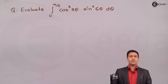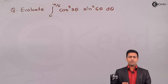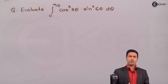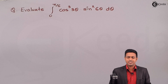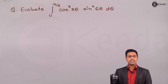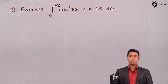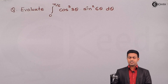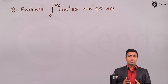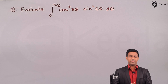Hello students, here we are going to see the concept of beta function and solve a numerical based on its definition. The problem is the integration from 0 to π/6 of cos³(3θ) · sin²(6θ) dθ, and we have to evaluate this. Since we can see sine and cosine terms, we can apply the definition of beta function.